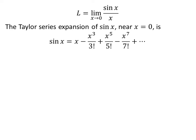The Taylor series expansion of sine of x near x equals 0 is x minus x cubed upon factorial of 3 plus x raised to the power of 5 upon factorial of 5 minus x raised to the power of 7 upon factorial of 7 plus so on.